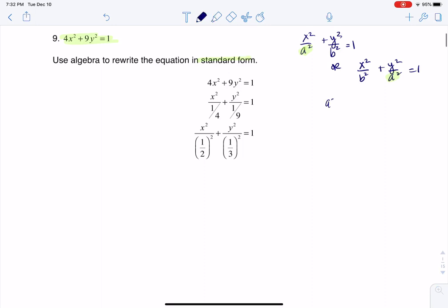A squared is always the larger number, always larger than b squared, and that's how that works in ellipses, which is what this section is. When you get into hyperbolas in section 8.2, it's a slightly different format.